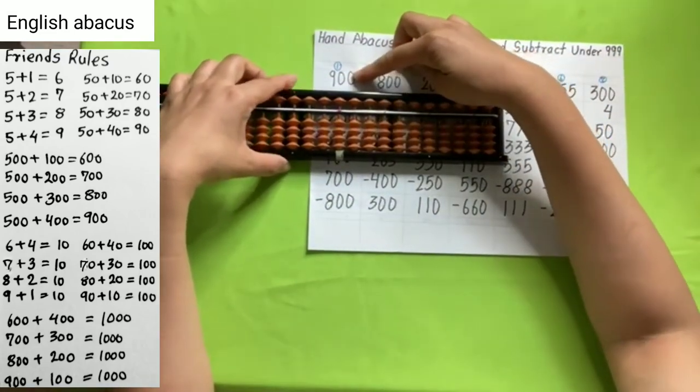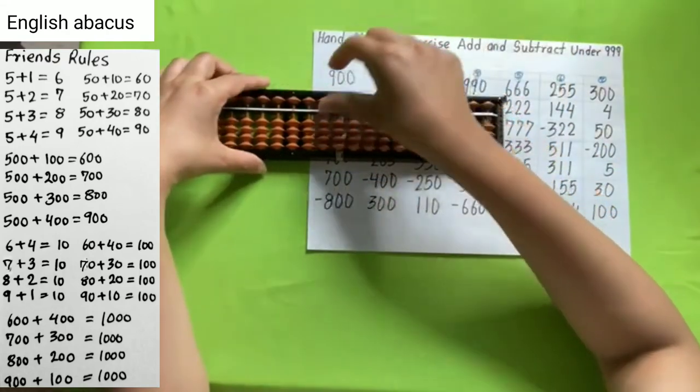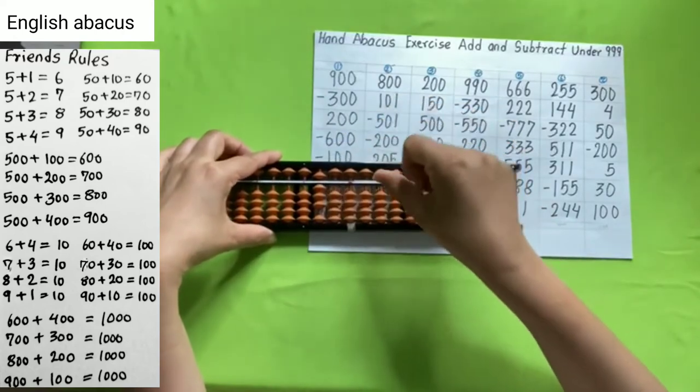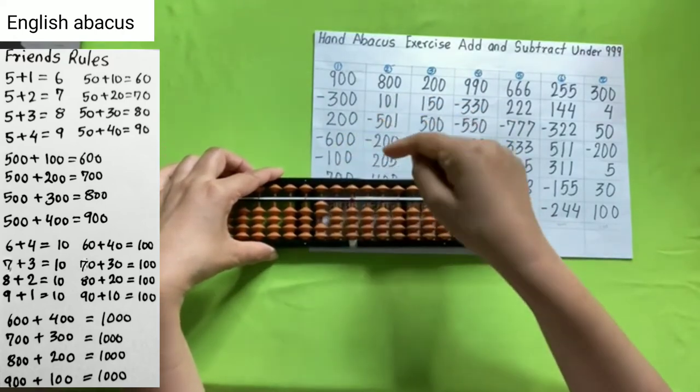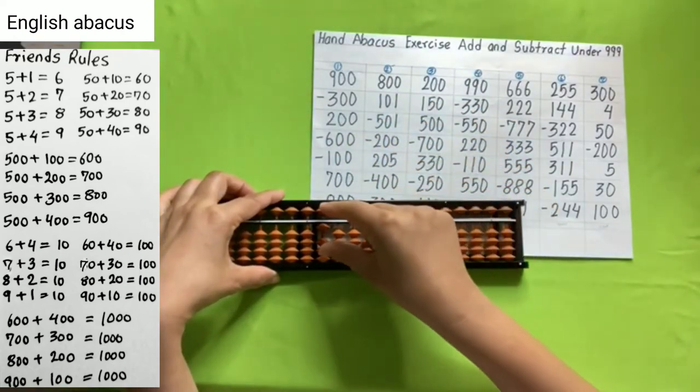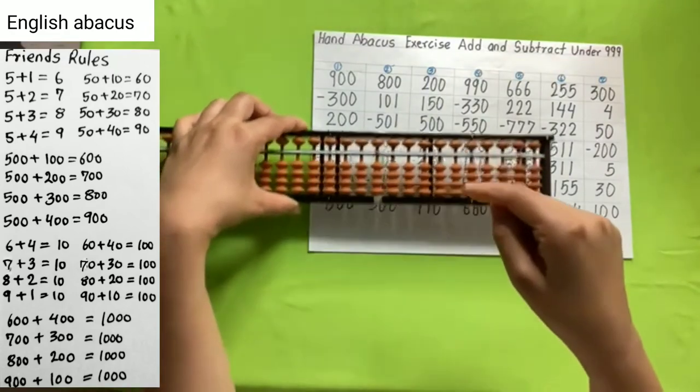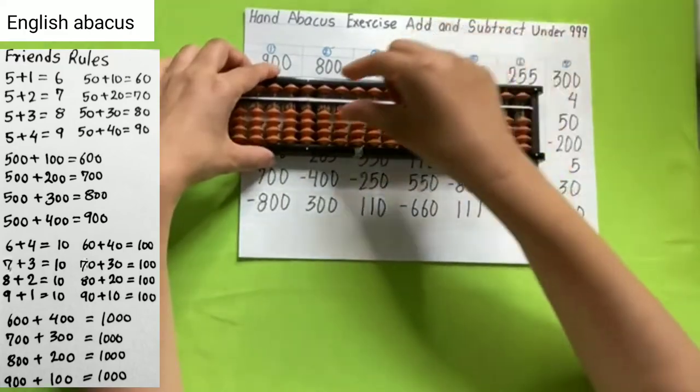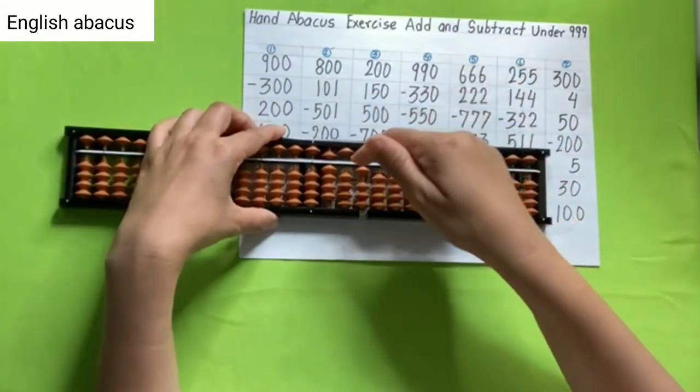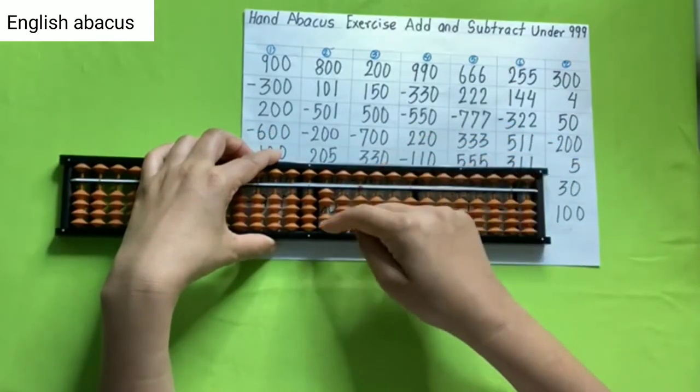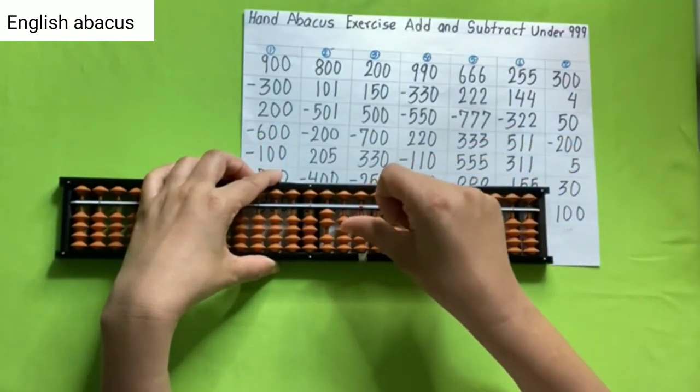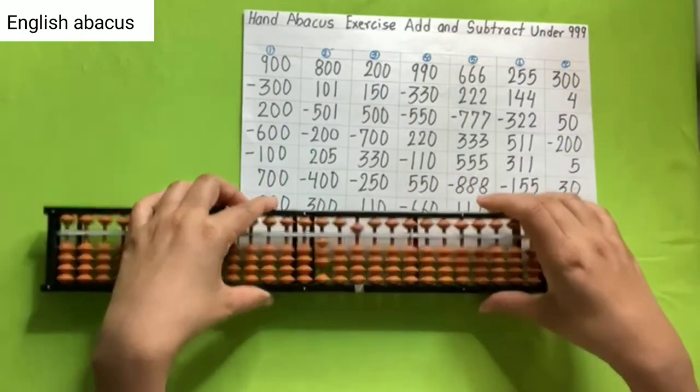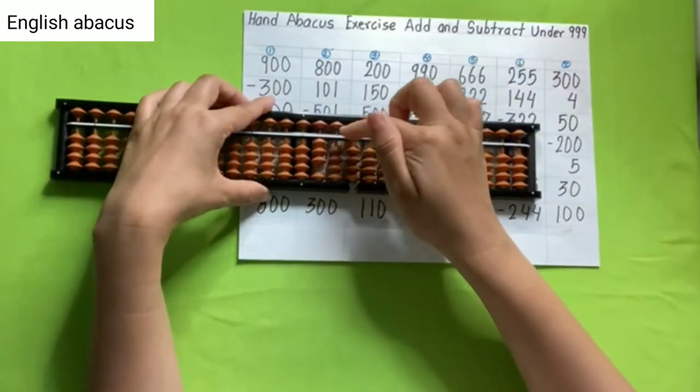So smoothly move your abacus, and start from 900. This is 900. Reduce 300, add 200, reduce 600, add 700, and reduce 800. And answer is 0. Number second, 800, 101, and reduce 501, reduce 200, and add 205, reduce 400, and add 300, and your answer is 305.